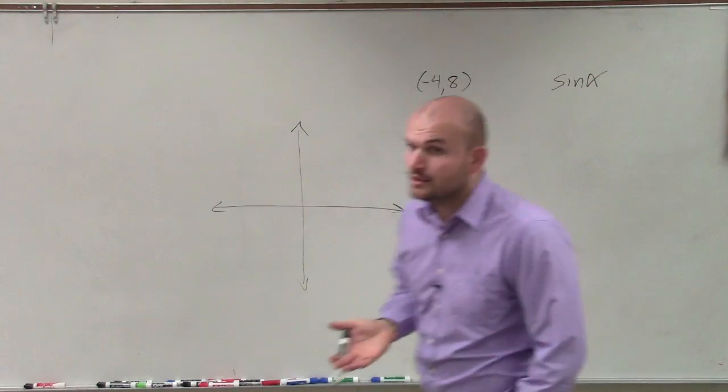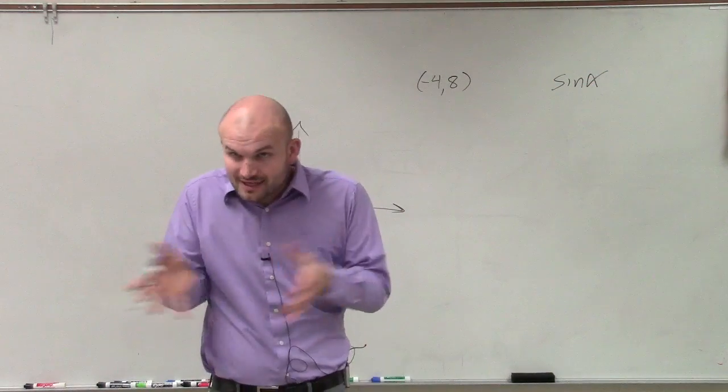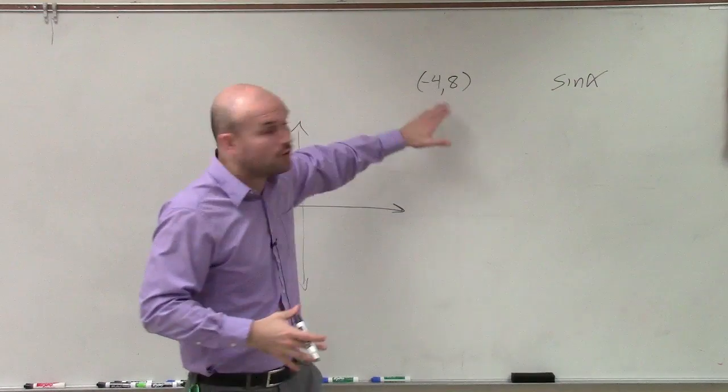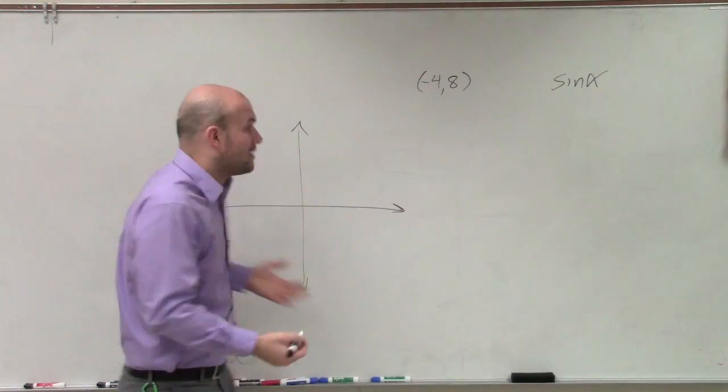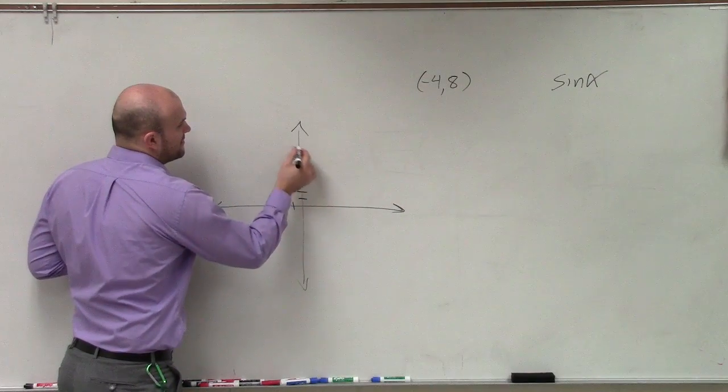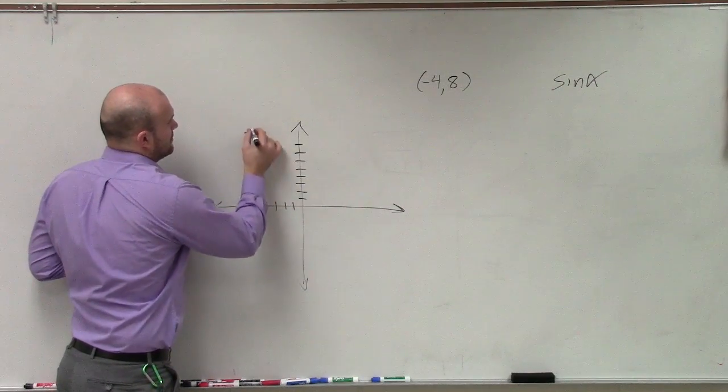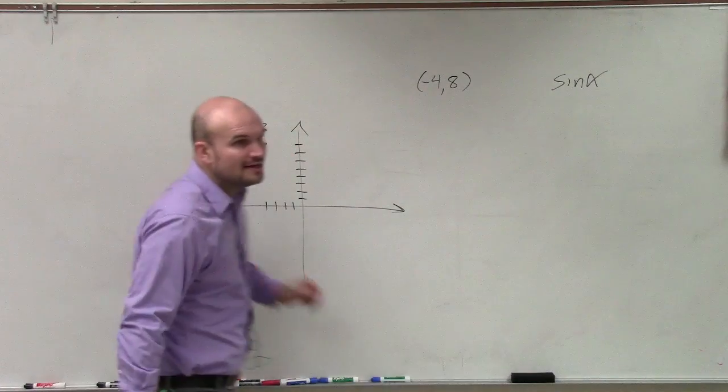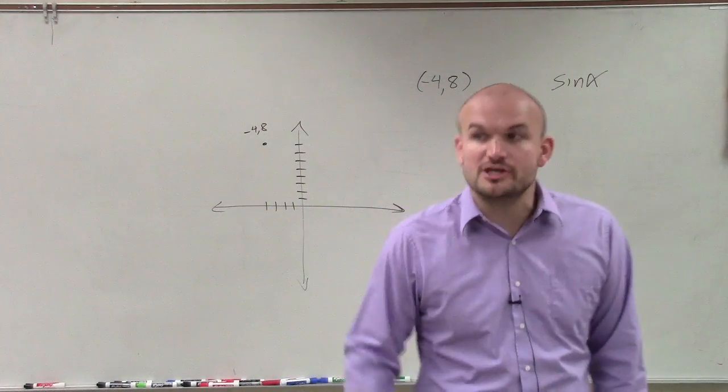All right, so we need to create a triangle. Well, ladies and gentlemen, if you're taking a test and you see a problem like this, you have a coordinate point. If anything, draft the coordinate point. Negative 1, 2, 3, 4. 1, 2, 3, 4, 5, 6, 7, 8. Right? Everybody should know how to plot a coordinate. So you plot the coordinate.